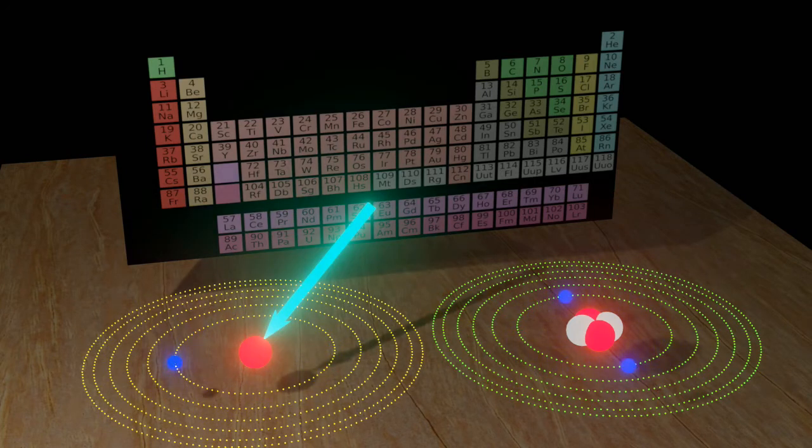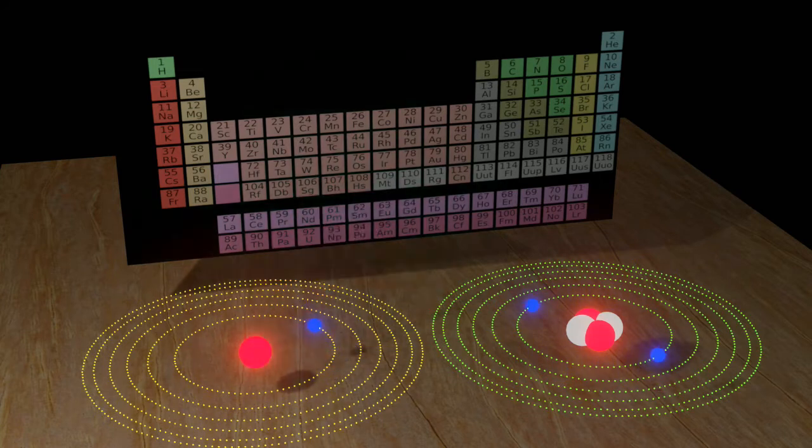In case of hydrogen, nucleus contains only one proton. Also, one electron can be found on the orbit.